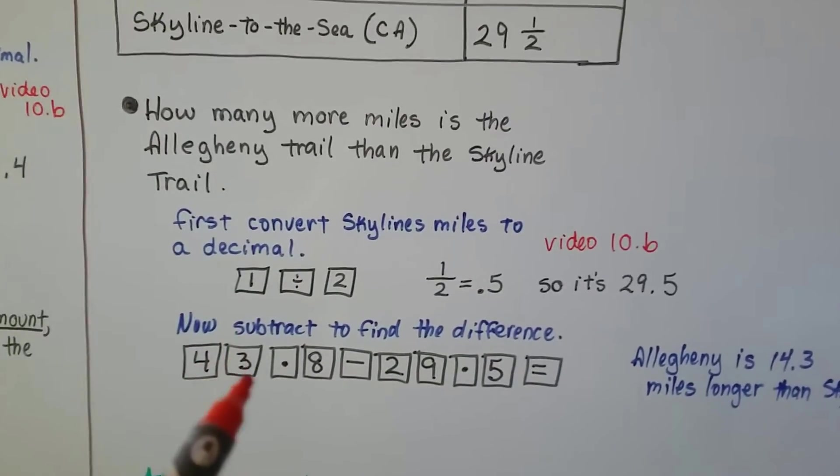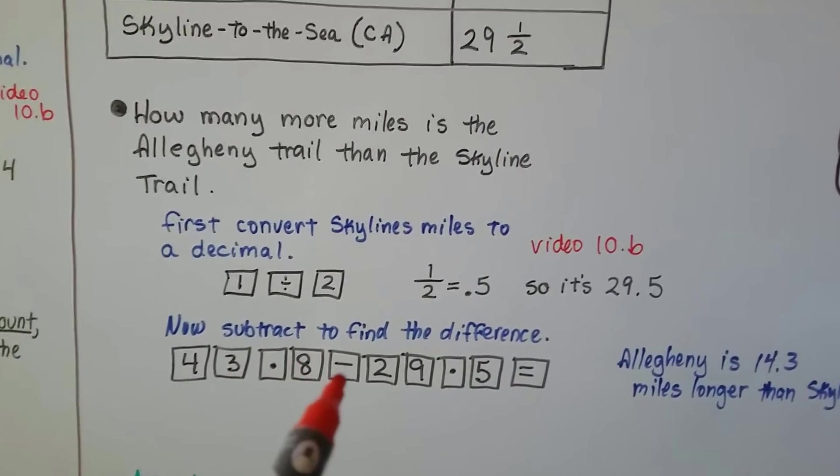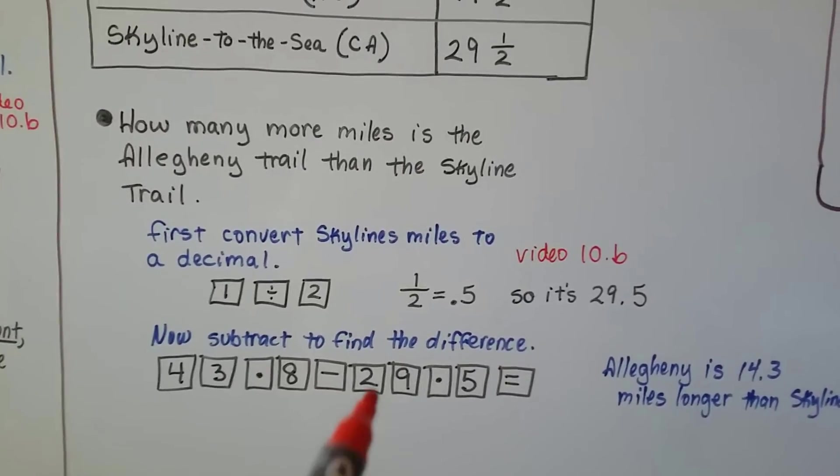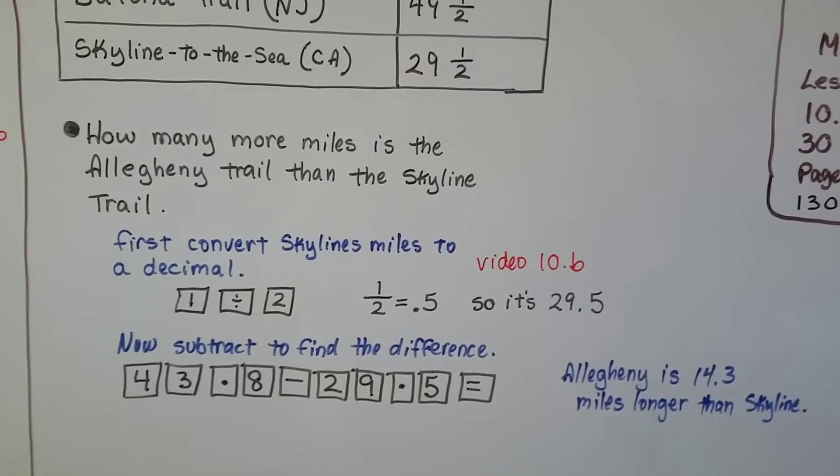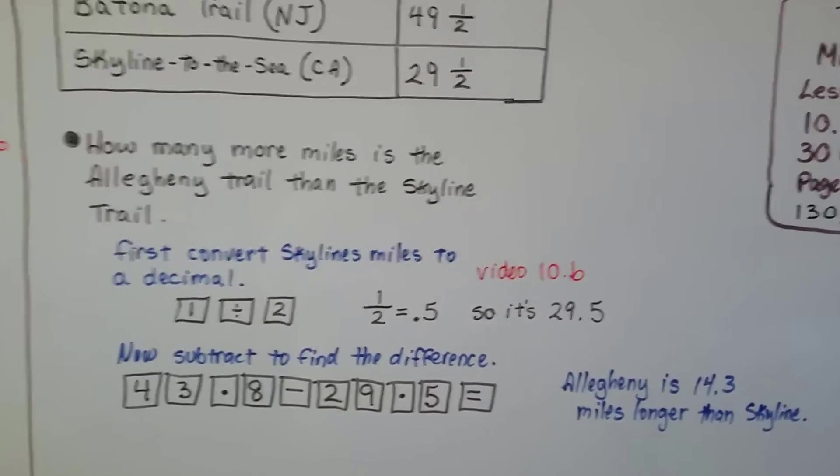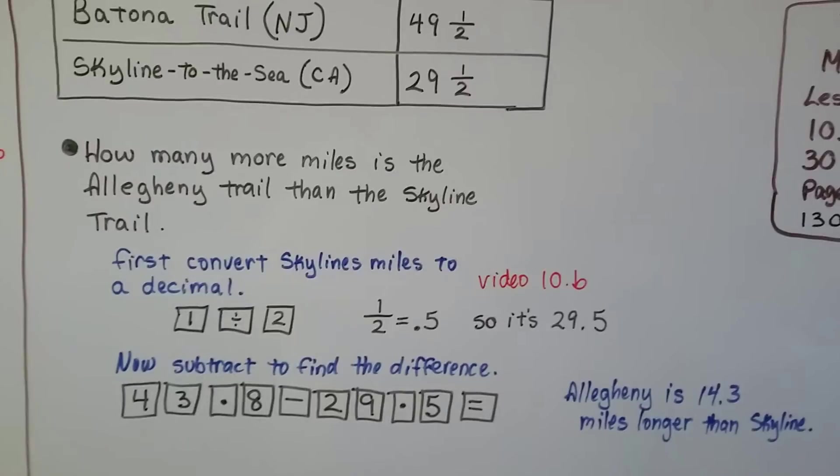Now, we can subtract to find the difference. The Allegheny Trail is 43.8. We put in a 4, a 3, a decimal point, an 8. We hit the subtraction button. Then we put in the 2, the 9, the decimal point and the 5 and equals and find out that it's 14 and 3 tenths miles longer than Skyline.